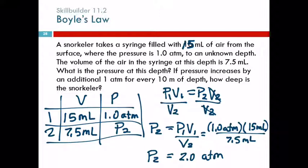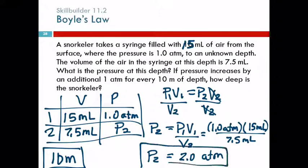Now this last sentence: If the pressure increases by an additional 1 atmosphere for every 10 meters of depth, how deep is the snorkeler? Well, we just figured out the pressure at this depth is 2 atmospheres. How much greater is that than the 1 atmosphere at the surface? 1 atmosphere, right? And this tells us that it increases 1 atmosphere for every 10 meters. So he must be 10 meters below the surface, because the pressure increased by 1 atmosphere. Being able to calculate P2 is very important. Being able to answer this last part, not so much. So the depth must be 10 meters. So that's one answer, and here's the other.